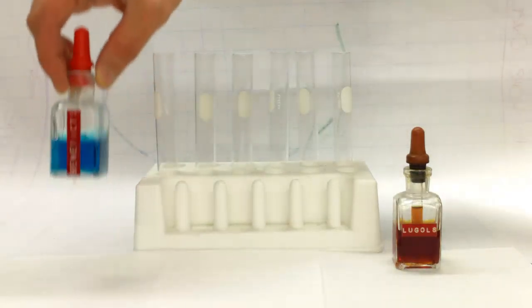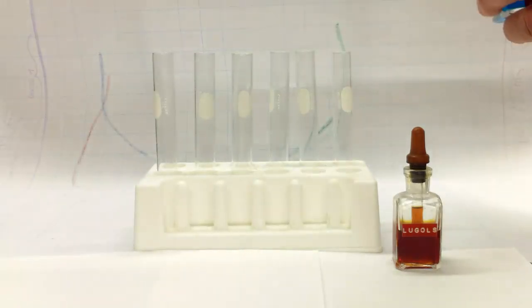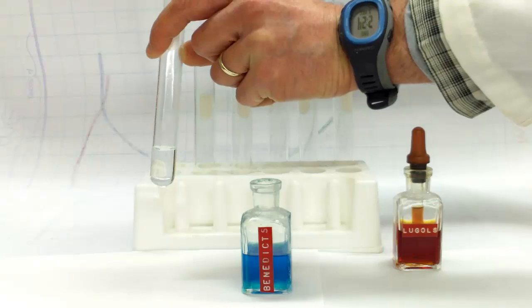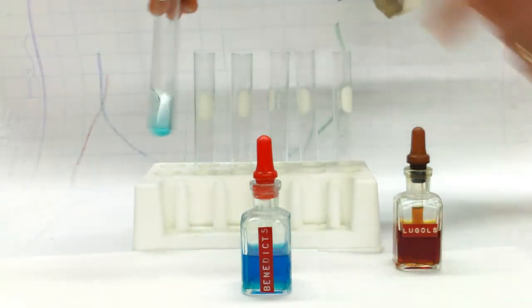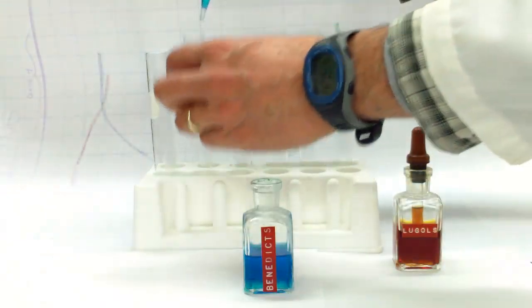You use the Benedict's solution by putting 10 drops into the test tube and then putting it in the hot water bath. So 1, 2, 10, and you'll see that it's a blue color. Let's go ahead and add the Benedict's to each one of these, and then we'll put them in the hot water bath all at once.